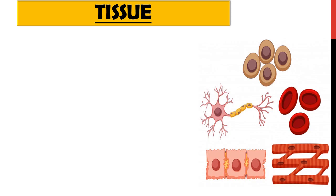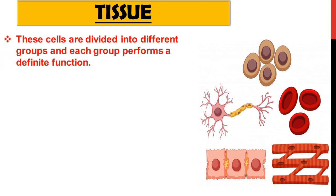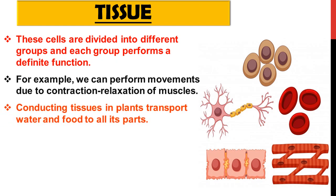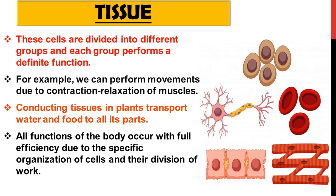You can observe different types of cells like neurons, blood cells, and epithelial cells. These cells are divided into different groups, each performing a definite function. For example, movements occur due to contraction and relaxation of muscles. Conducting tissue in plants — xylem and phloem — transports water and food to all parts of the plant. All body functions occur with full efficiency due to specific organization of cells and division of work.